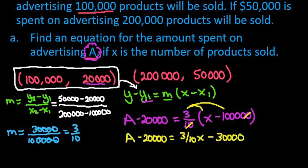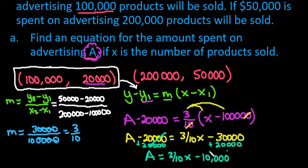And then if I bring the 20,000 over to the other side, we end up with a equals 3 tenths x. And then if I add the 20,000 from the other side, we end up with minus 10,000. So this would be our equation to represent the amount. So the amount is equal 3 tenths of x minus 10,000.